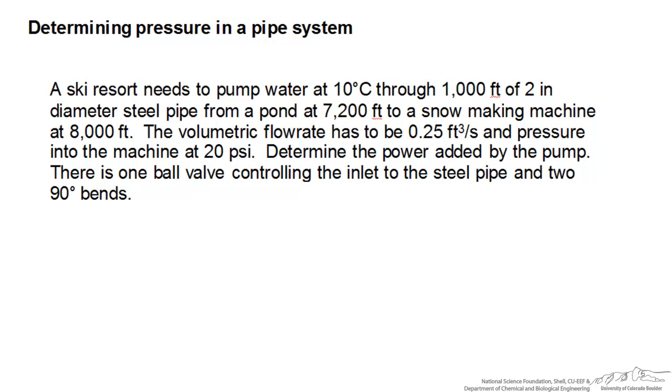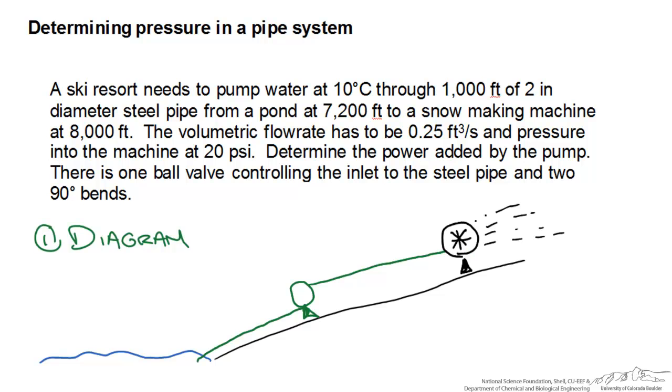With any problem like this, the first place to start is by drawing a diagram. We're going to draw our hill and our water reservoir down here, then our piping system that comes from the water reservoir into some kind of pump, comes out and goes to our snow blowing machine. There's also a valve at the entrance and two 90-degree bends.